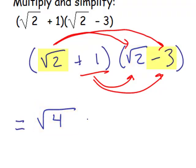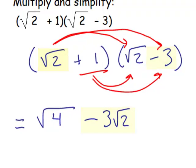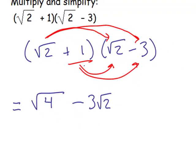Square root of 2 times negative 3 is negative 3 square root of 2. We cannot combine them any further than that. Multiplying 1 times square root of 2 is a positive 1 square root of 2. And 1 times negative 3 is negative 3.